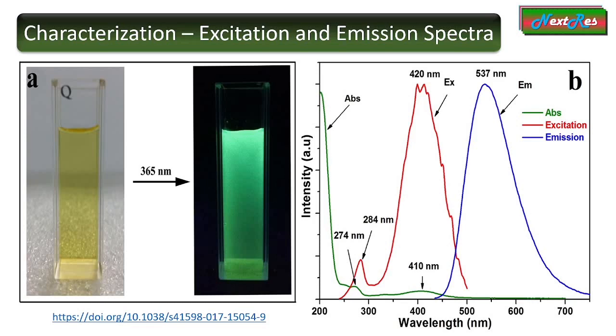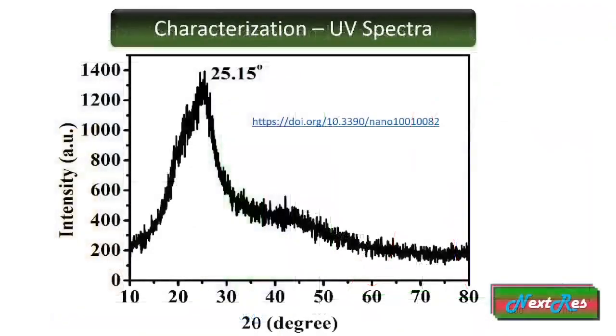Then using a spectrofluorophotometer, you have to measure the maximum emission intensity for excitation at which wavelength. Coming to X-ray diffraction, you can expect to see a broad peak at 2-theta value near 25 degrees. This originates mainly due to partial graphitic cores of the carbon quantum dots.